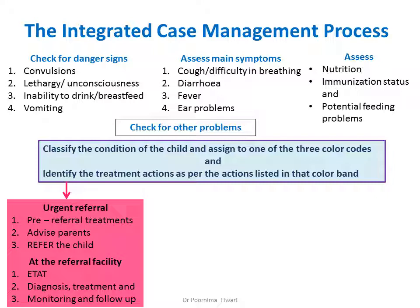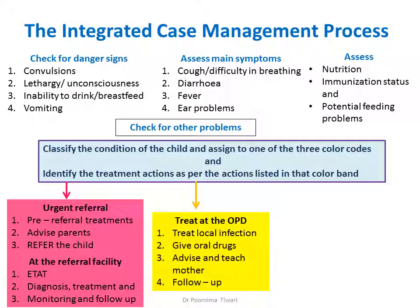At the referral facility, the child is assessed, given emergency treatment, then a specific diagnosis and treatment, and follow-up. If the child falls in the yellow category, treatment has to be given at the OPD itself — this may include treating the local infection, giving oral drugs at the center, advising and teaching the mother how the drugs are given, what she should do when she goes home, and calling her for follow-up after two days.